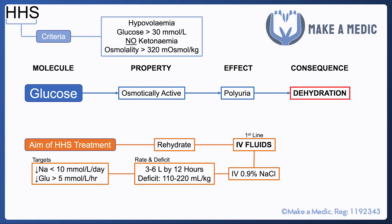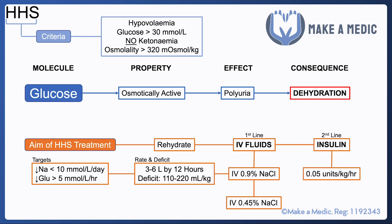The targets to monitor are serum sodium concentration and serum glucose. Serum sodium should fall by no more than 10 millimoles per liter per day, and glucose should be falling by at least 5 millimoles per liter per hour. If 0.9% saline isn't achieving these targets, 0.45% saline may be considered. If fluids alone aren't sufficient, insulin may be added, usually given at a rate of 0.05 units per kilogram per hour.